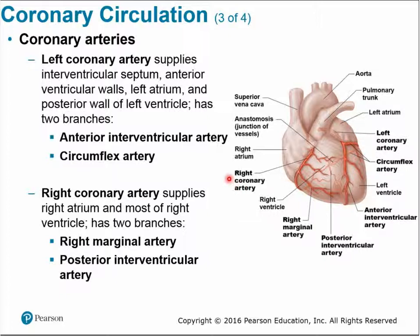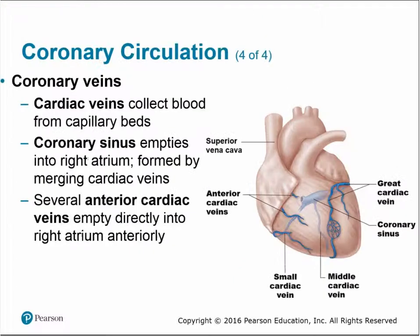The right coronary artery supplies the right side of the heart — the right ventricle and right atrium — and has two main branches: the right marginal artery and the posterior interventricular artery, wrapping around to the back of the heart. Coronary veins collect blood from the capillary beds and empty into the coronary sinus, which drains into the right atrium alongside the superior and inferior vena cava.